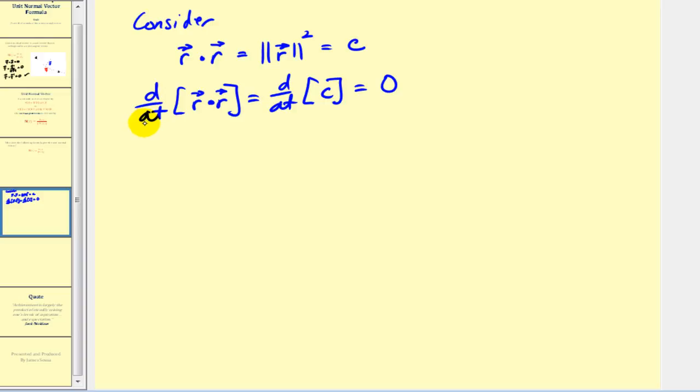Now we're going to apply a principle of the derivatives of a vector valued function of this dot product. Now this property should remind you of the product rule for differentiation. We have the first vector valued function dotted with the derivative of the second vector valued function, plus the derivative of the first vector valued function dotted with the second vector valued function.